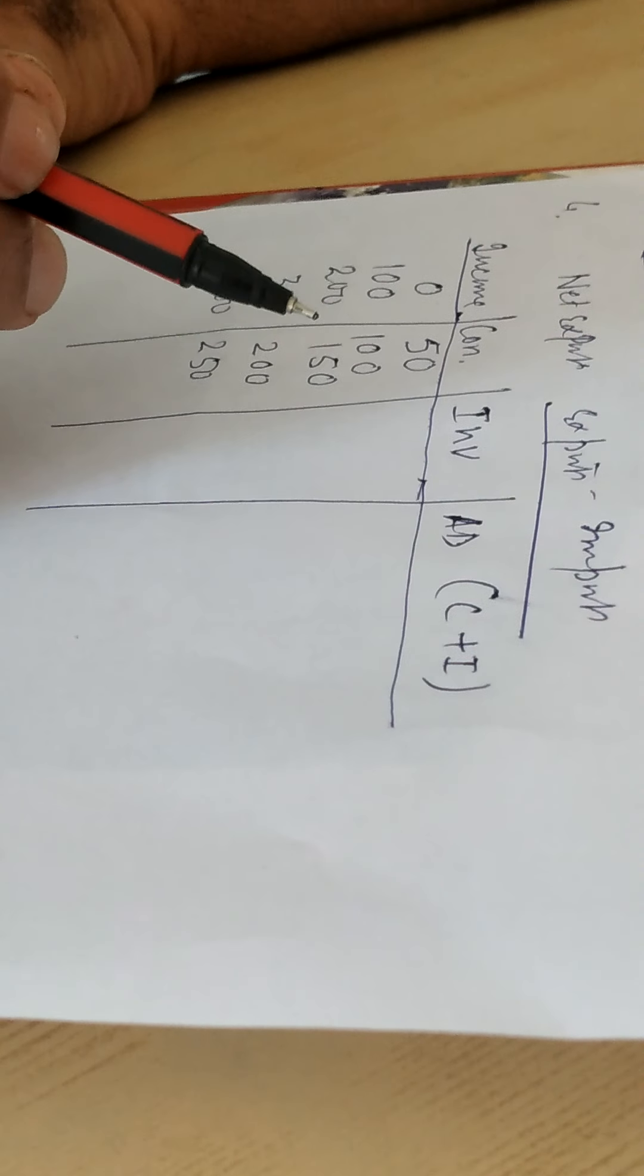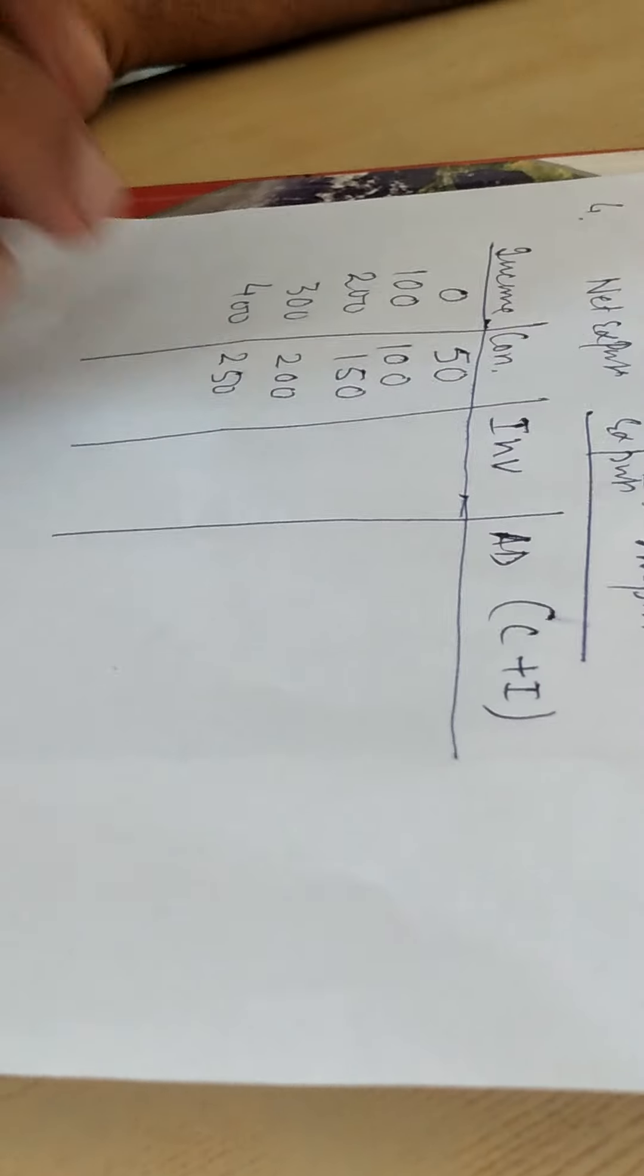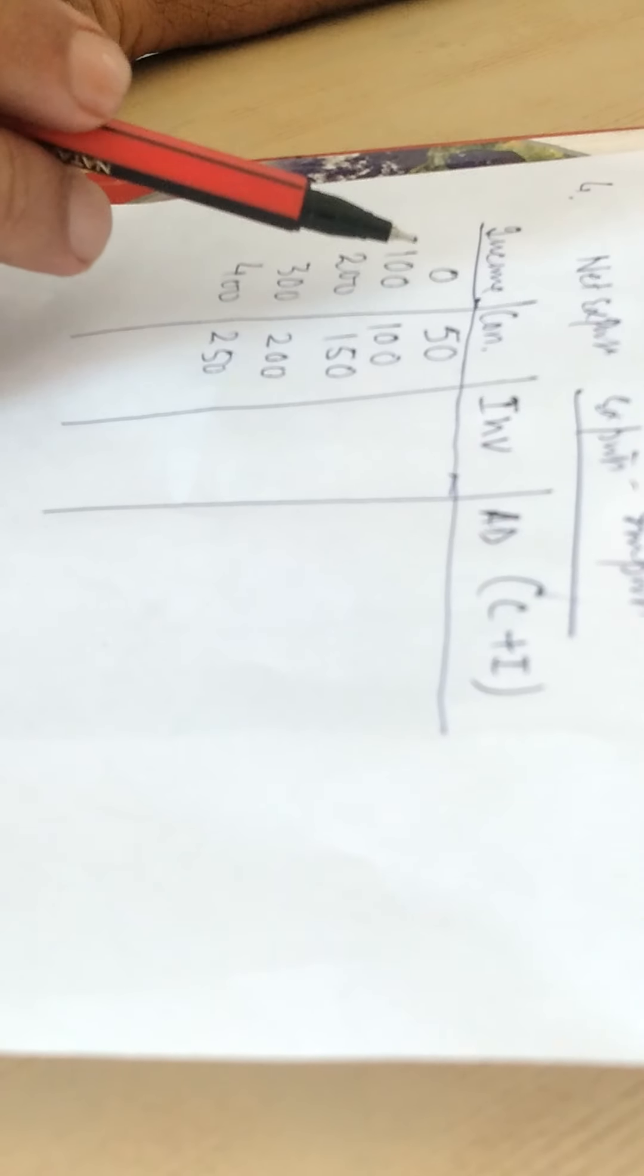This table is based on two main assumptions, or you can draw two main conclusions from this table. One thing, one main conclusion is when income is zero.